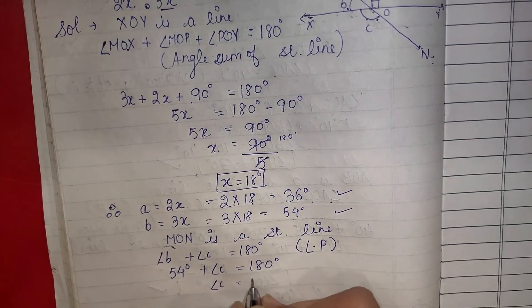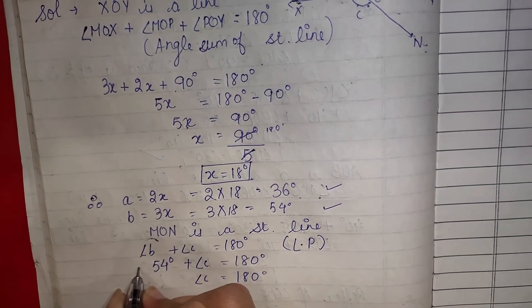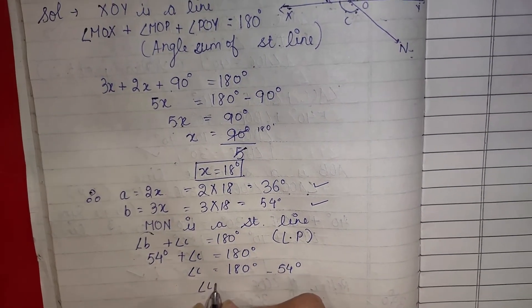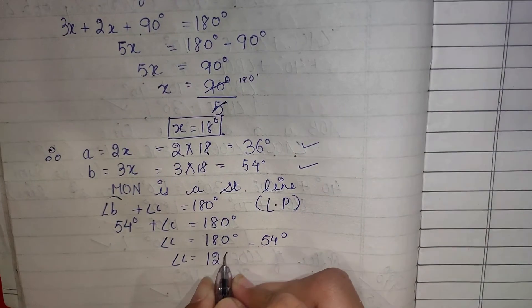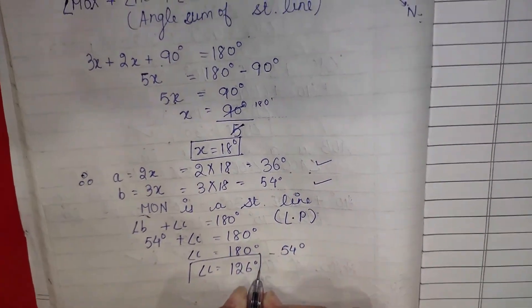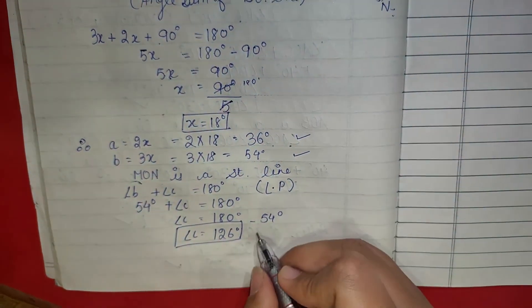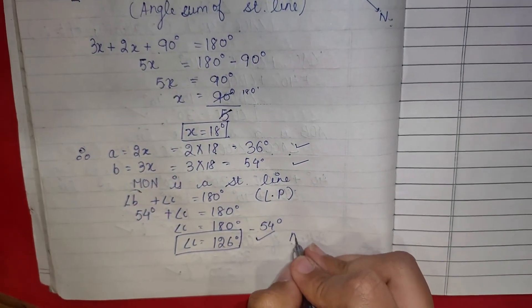Angle b हमारे पास है 54, angle c हमें find करना है। Angle c को हम यहीं छोड़ देंगे और यहां जाके plus है यहां जाके minus हो जाएगा। So angle c की value हमारे पास क्या आ गई, 126. हमसे angle c की value ही पूछी थी, angle c की value आ गई. It is your answer.